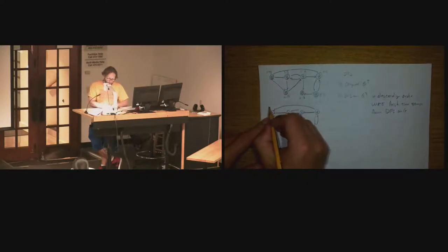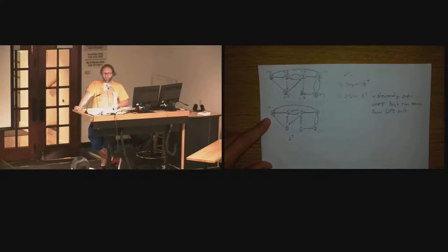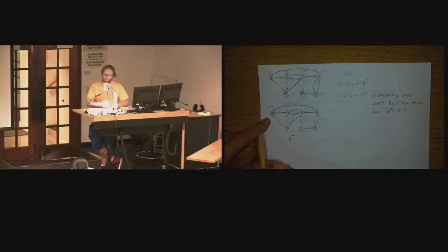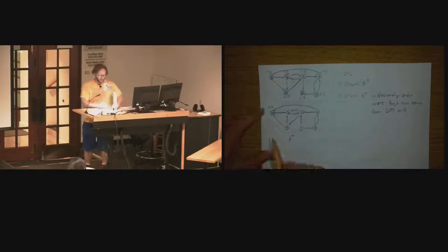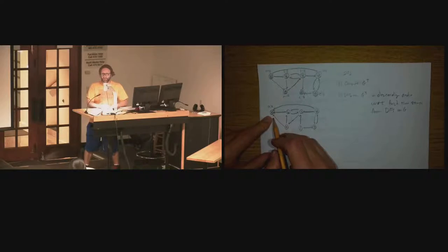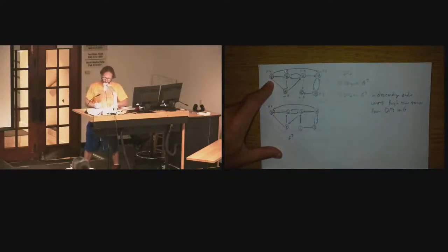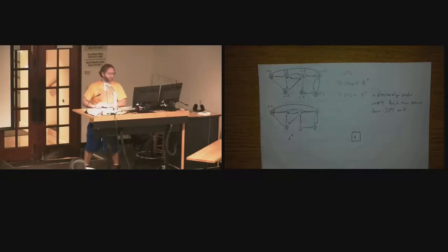A gets colored gray. But the neighborhood of A in the transpose is empty, so we finish it and color it black. Now we need to restart DFS. Let's understand why that happened. Characterize A in the original graph — it has all outgoing edges, making it a source. If you reverse everything, a source becomes a sink. So A is not strongly connected to anything other than itself. From A, I can go to many other vertices, but from any other vertex, is it possible to get back to A? No. So A by itself is going to be a strongly connected component.